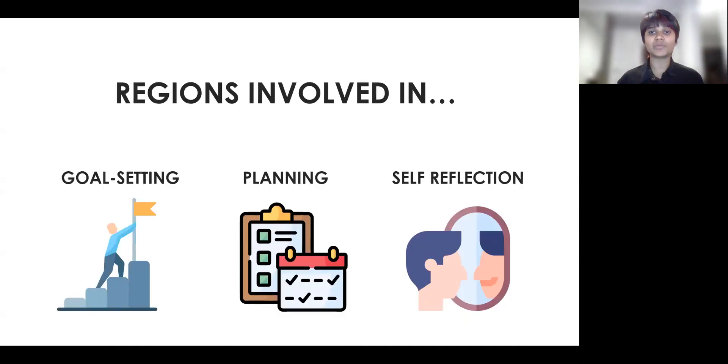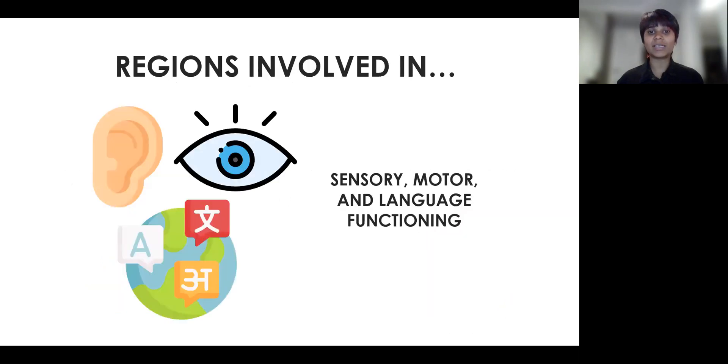And these alterations were found to be in brain regions involved in several higher order cognitive functions, such as goal setting, planning, learning and memory, self-reflection, executive function, as well as sensory motor functioning and language processing.